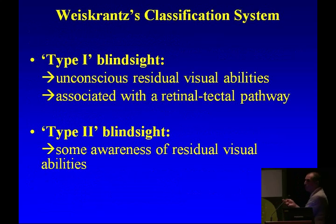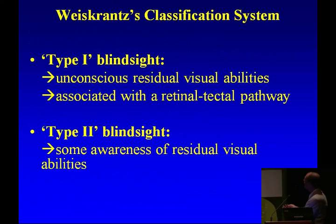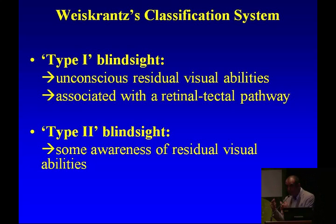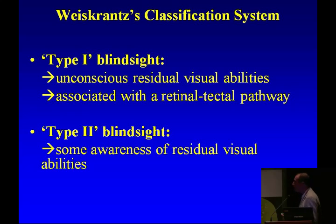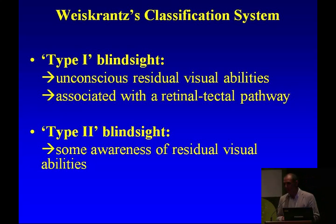Weiss-Krantz distinguished two types of blindsight. Type one blindsight involves unconscious residual visual ability associated with a retinal tactile pathway. Type two blindsight involves some awareness of residual visual abilities. People have claimed that type two blindsight may be due to artifacts such as spared striate cortex responsible for the visual abilities, and not due to something unconscious. This is a fair criticism. So we focused on type one blindsight because our subjects had no cortical visual areas left on one side, or at least those areas were disconnected from the rest of the brain.